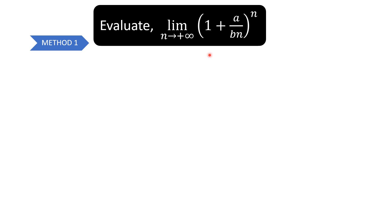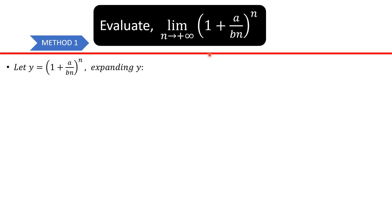The first thing we're going to do is let this expression be y. We're going to perform a binomial expansion on y. Here, a is 1, b is the term a over bn, and n is just n. So we use the binomial expansion: a raised to the power n, plus n times a raised to the power n minus 1 times b raised to the power 1, over 1 factorial.